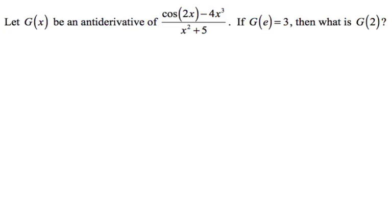So the first one is we're going to let g of x be an antiderivative of this thing. And if g of e is equal to three, then what is g of two? Okay, so a couple of things to look at here. So g of x is an antiderivative of this thing. So that means that the thing we're looking at is g prime of x. And then the other thing that we want to think about is we know g of e and we want g of two. Well, that's relevant because e is actually bigger than two. So that means we need to kind of go backwards in this case.